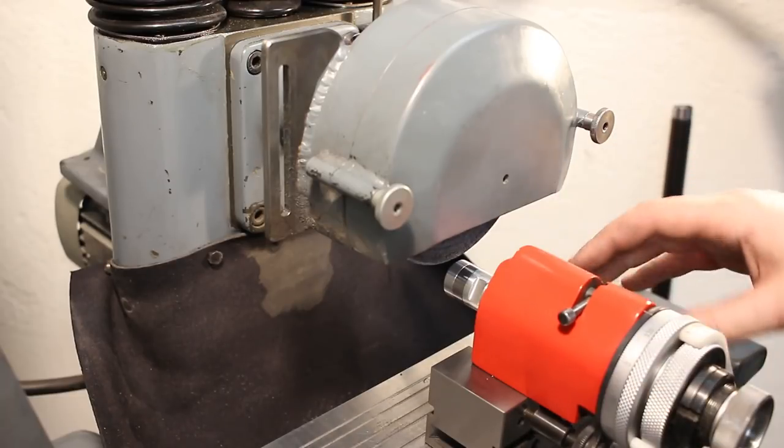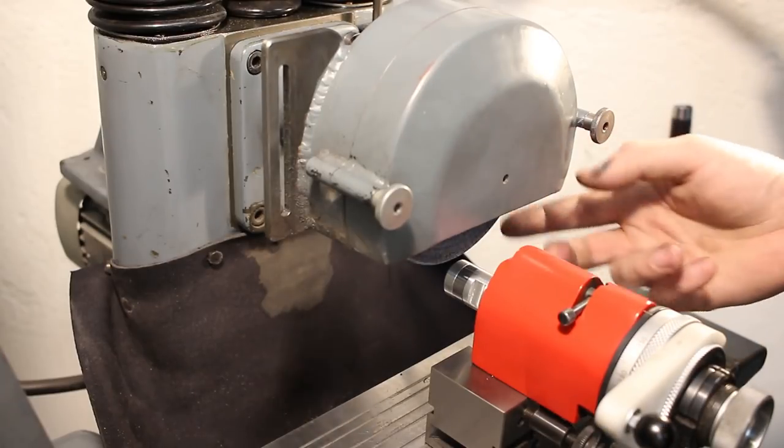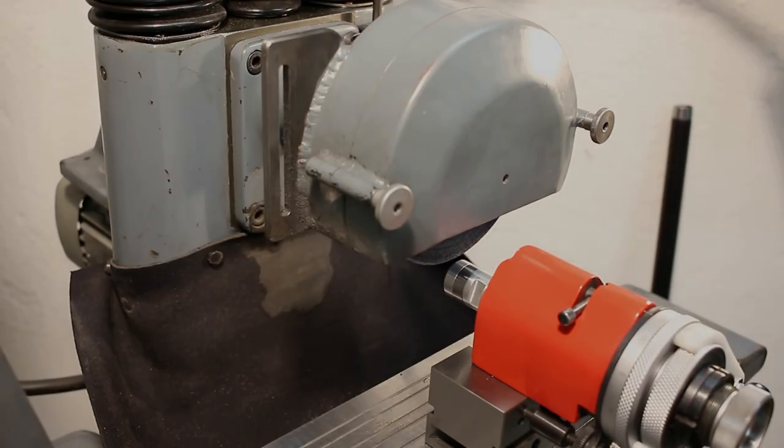Especially if I use my between-center jig. Couldn't use the between-center jig for this part, of course, because it's a stub arbor, but the work head of the grinder worked quite well for this.